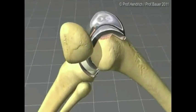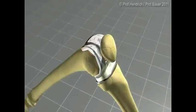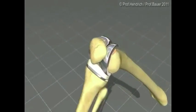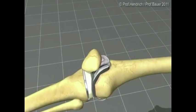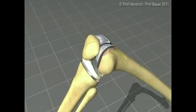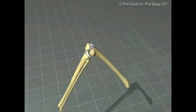An inlay between femur and tibia is positioned, which consists of highly stable polyethylene. The kneecap is reduced and the range of motion of the joint is checked once more.